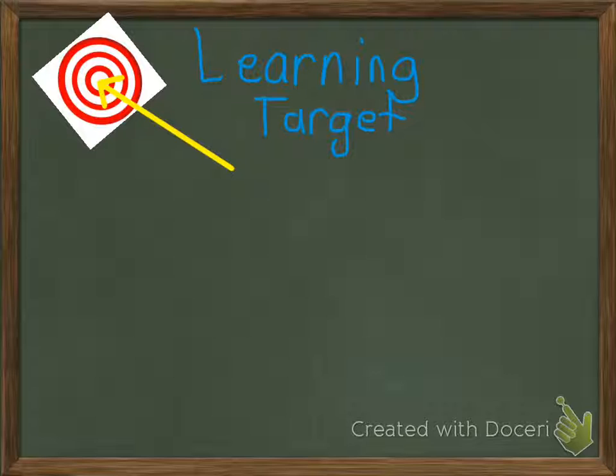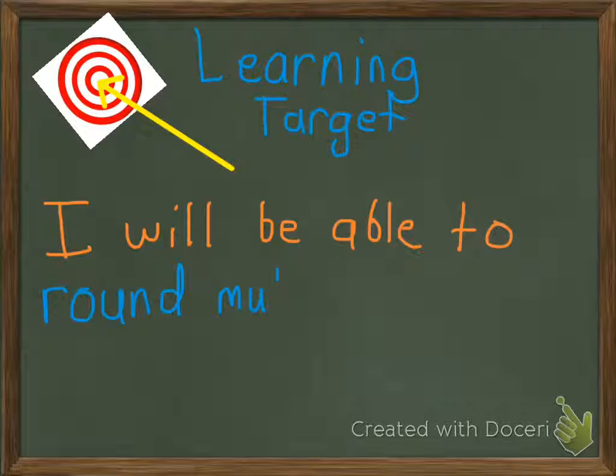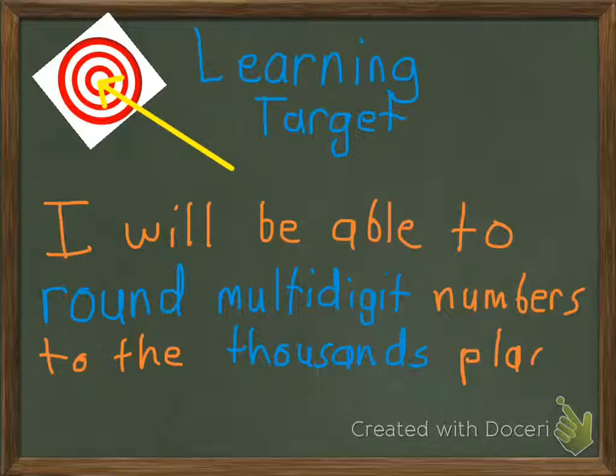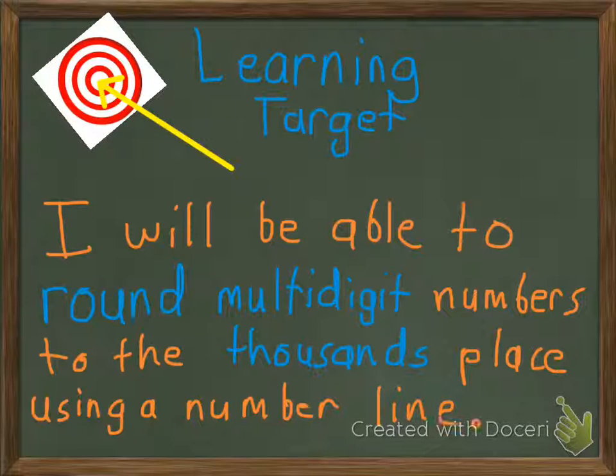This is what you're going to go home and tell mom and dad that you learned today. So, let's go ahead and read what they say. It says, I will be able to round multi-digit numbers to the thousands place using a number line.